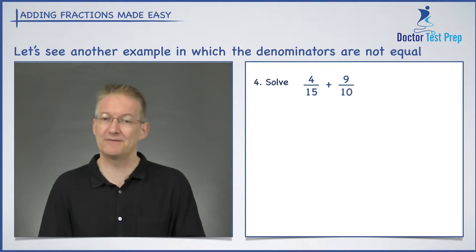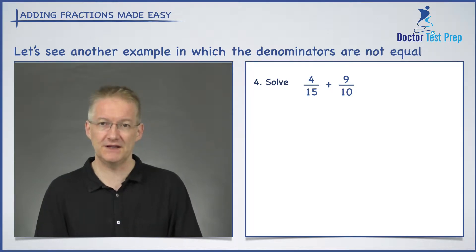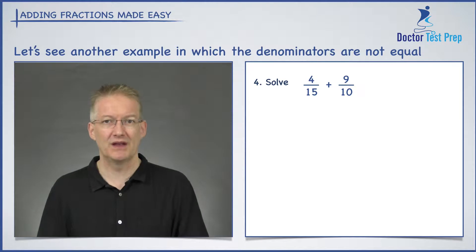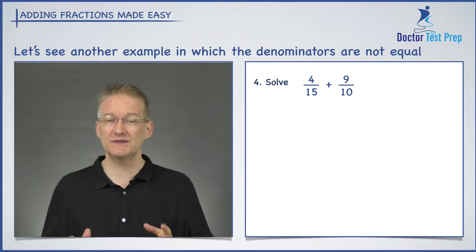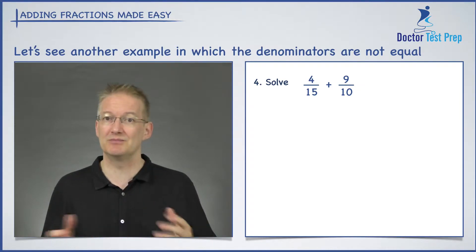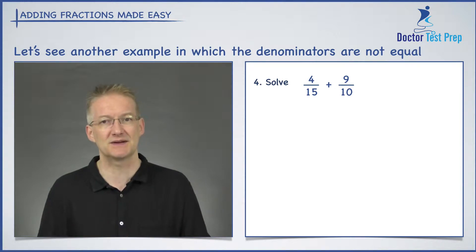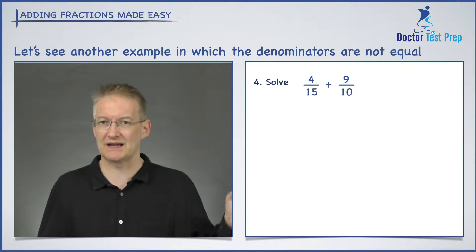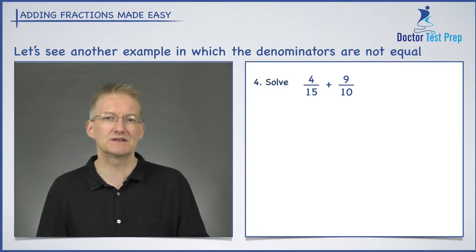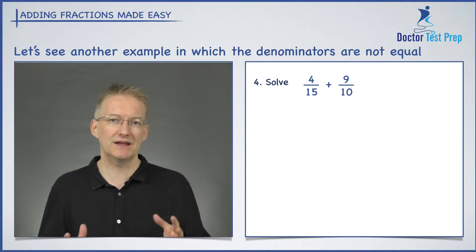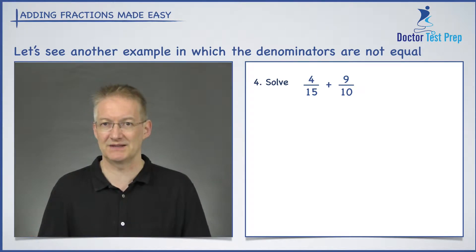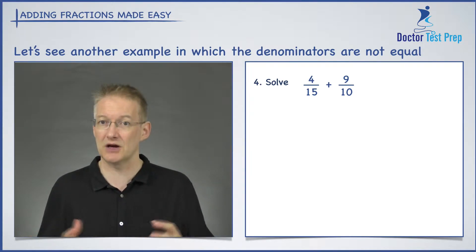Let's have a look at number 4 now. We have 4 over 15 plus 9 over 10. Now, I could use the same method I did before, where I simply multiply those numbers together — so 15 times 10 to give me 150 — and then write each fraction as something over 150. But 150 is quite a big number, and wouldn't it be nice if I could find a lower denominator, a lowest common denominator?